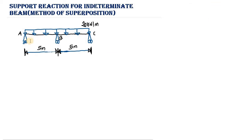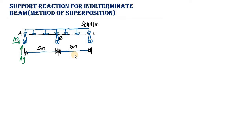If you take a look at the screen, we have a pin support at point A, a roller support at point B, and another roller support at point C. We have a rectangular distributed load of 20 kilonewtons per meter distributed throughout a length of 10 meters. The span from point A to B is five meters, and from B to C is also five meters. At point A, being a pin support, we have two unknown reactions: a vertical reaction Ay and a horizontal reaction Ax.